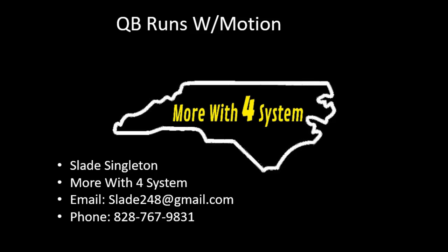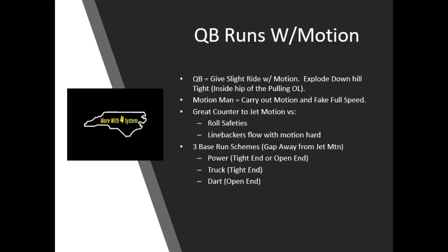We're going to go through this course and talk about our motions — simple motions that we use, and also maybe shifting the tailback down a little into a sniffer look. The basics of the course: QB runs with motion. Here's what we tell our quarterback — the quarterback is going to give a slight ride with motion, and we tell them to explode downhill tight inside hip of the pulling offensive lineman. We want him to basically ride just a little, just give time for that pulling guard to come around, or tackle, or H-back, and get up in that hole and give us a nice crease.